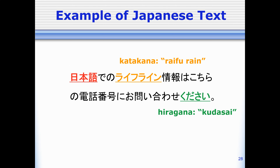What do you think a 'daifu line' might be in English? A lifeline. And last, these more complicated square-looking characters are the kanji. The sound of these characters is 'nihongo,' and the meaning is 'Japanese.'